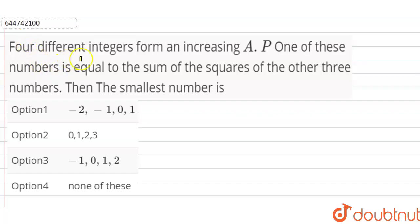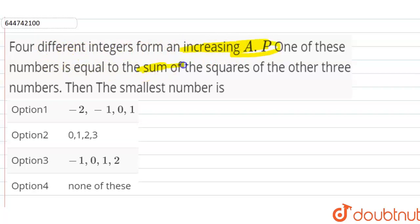Four different integers form an increasing AP. One of those numbers is equal to the sum of squares of the other three numbers. We need to find the smallest number.